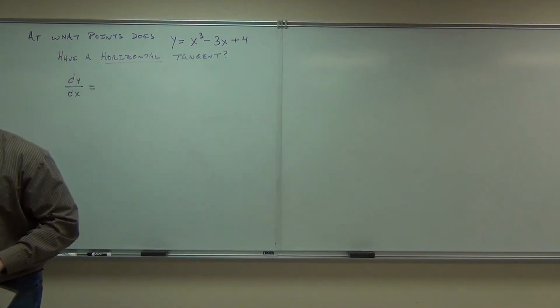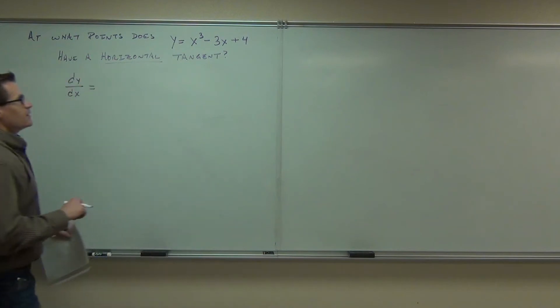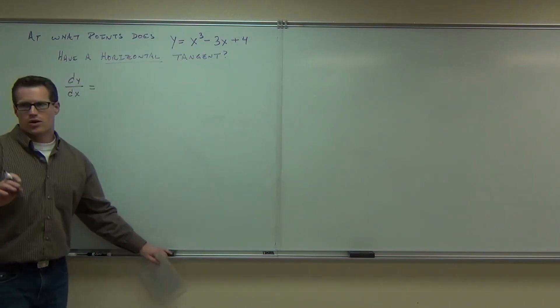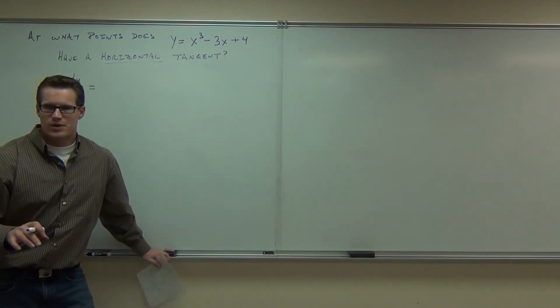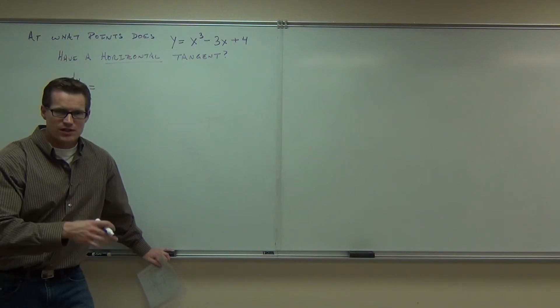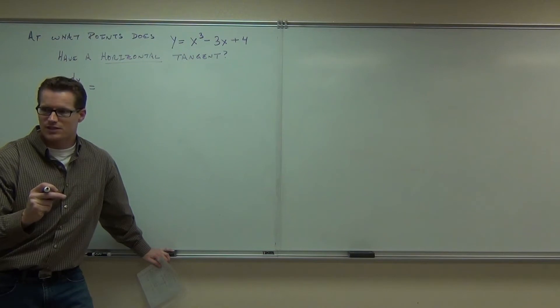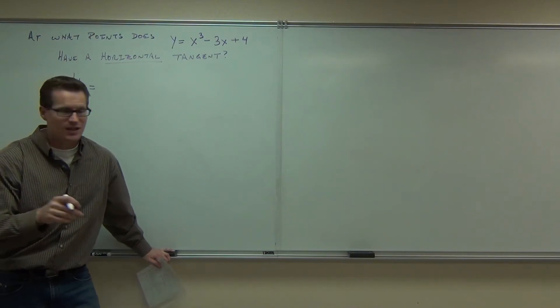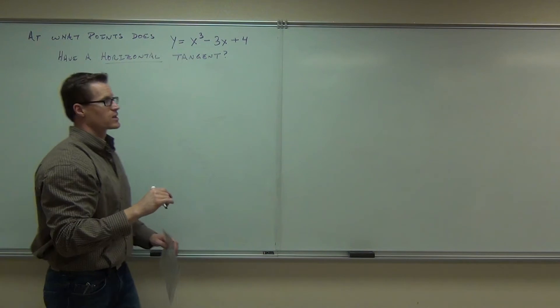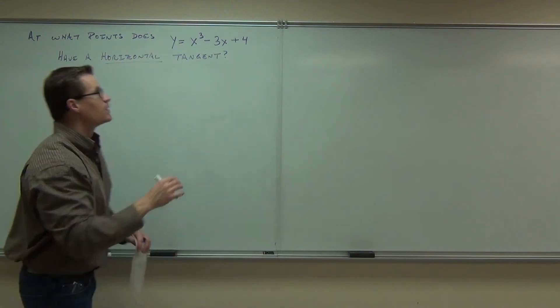Come on, we got this last time. Take your derivative. Derivatives now should be really quick. If we had to do the limit for this derivative, that would take forever, right? But now we can do it in literally five seconds. What's the derivative for y equals x cubed minus 3x plus 4? What is that? Three x squared minus three.